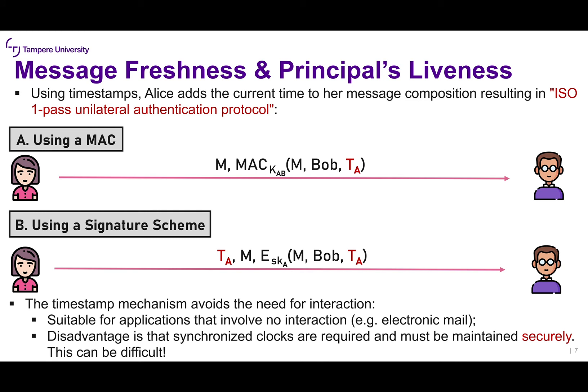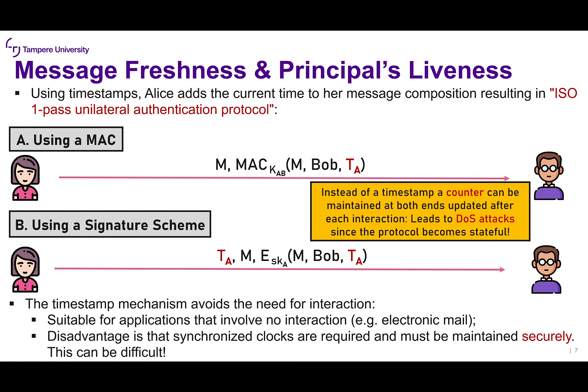The timestamp mechanism avoids the need for interaction — in the 2-pass protocol Alice and Bob exchanged two messages, whereas here they only exchange one. This is suitable for applications with no interaction, such as email. The disadvantage is that synchronized clocks are required and must be maintained securely. Alternatively, a counter can be maintained at both ends, updated after each interaction. The problem is that you need to maintain a database with all exchanged counters, which can lead to a denial-of-service attack since the protocol becomes stateful.